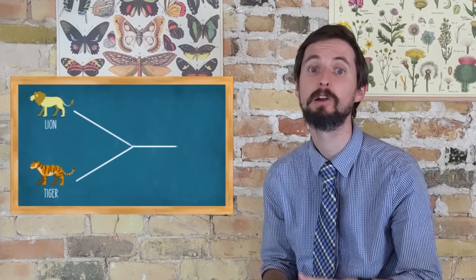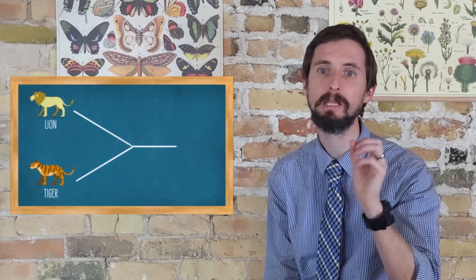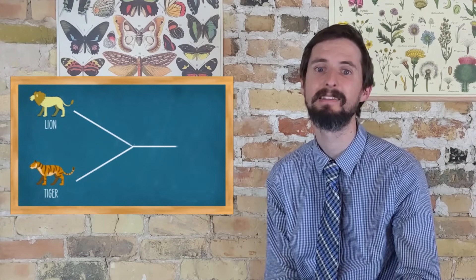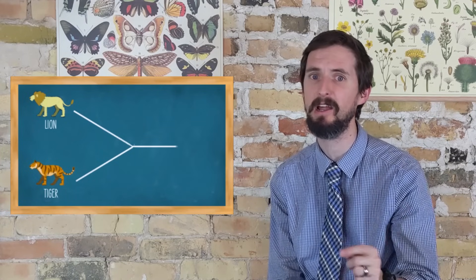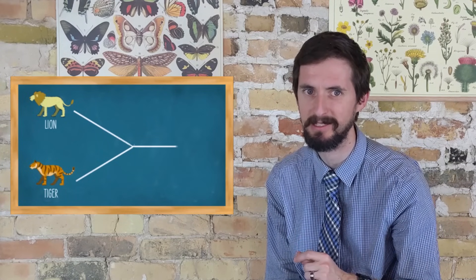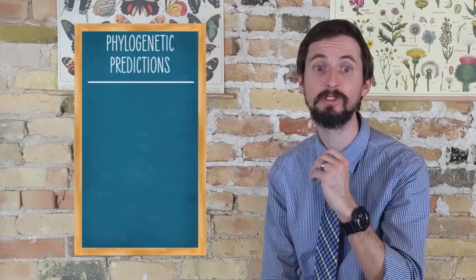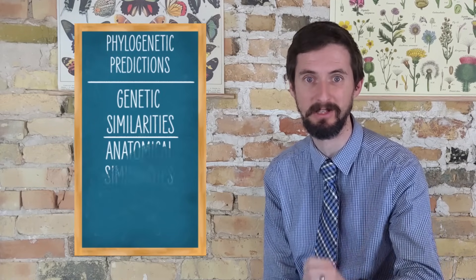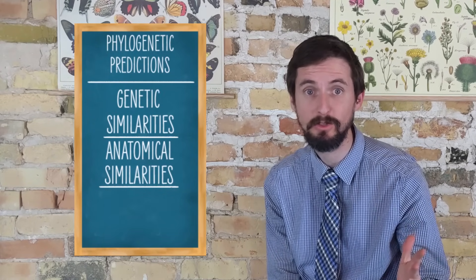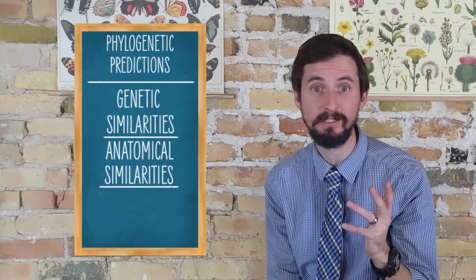This diagram, called the phylogeny, visually represents my hypothesis that these two species alive today are related and share common ancestors. Like any hypothesis, this one makes predictions. For example, I would predict that if lions and tigers share common ancestors they should have considerable genetic and anatomical similarities.